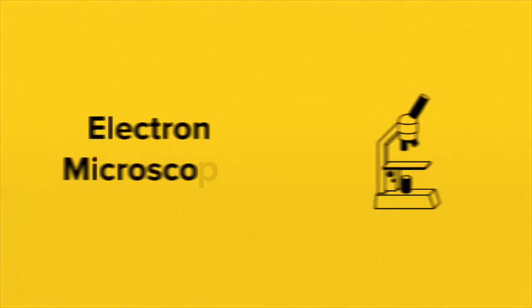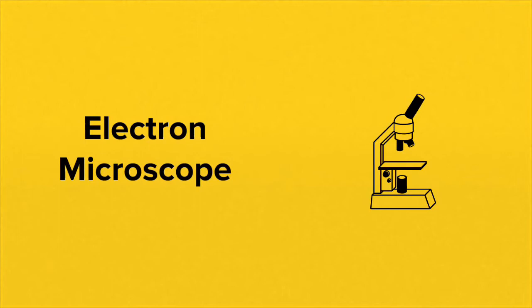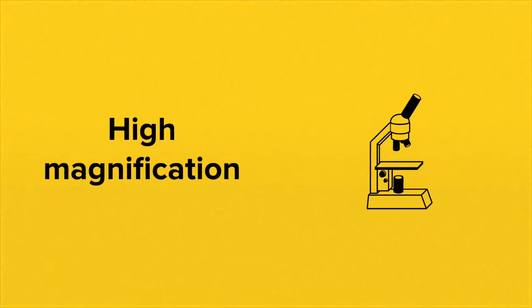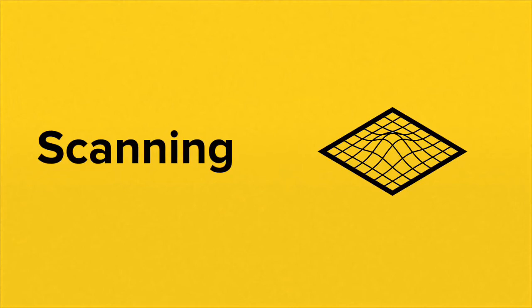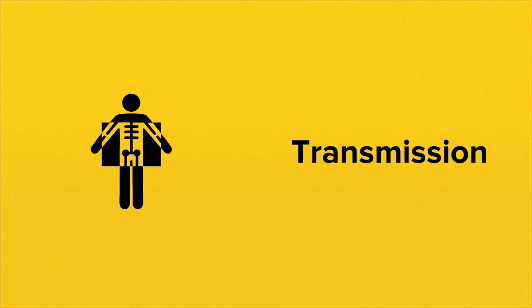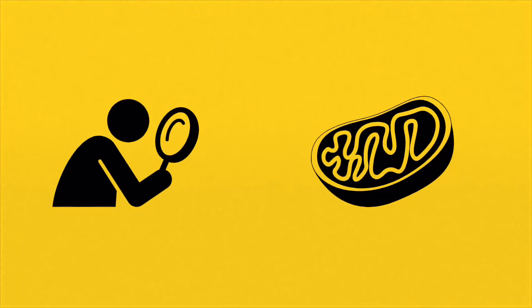Now let's look at the ultrastructure of the cell — all the details visible when viewing cells using an electron microscope. Electron microscopes are extremely powerful and can magnify cells hundreds of thousands of times. There are two types: the scanning electron microscope, which gives a detailed view of the outside of cells, and the transmission electron microscope, which gives a detailed internal view, allowing you to visualize organelles inside the cell.